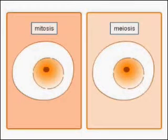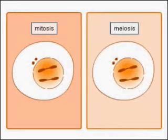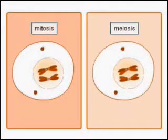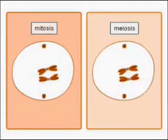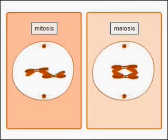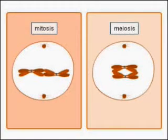In both mitosis and meiosis, a precise separation of chromosomes must occur. This is dependent on the spindle. An error in chromatin segregation is made only about once in every 10 to the power of 5 divisions.